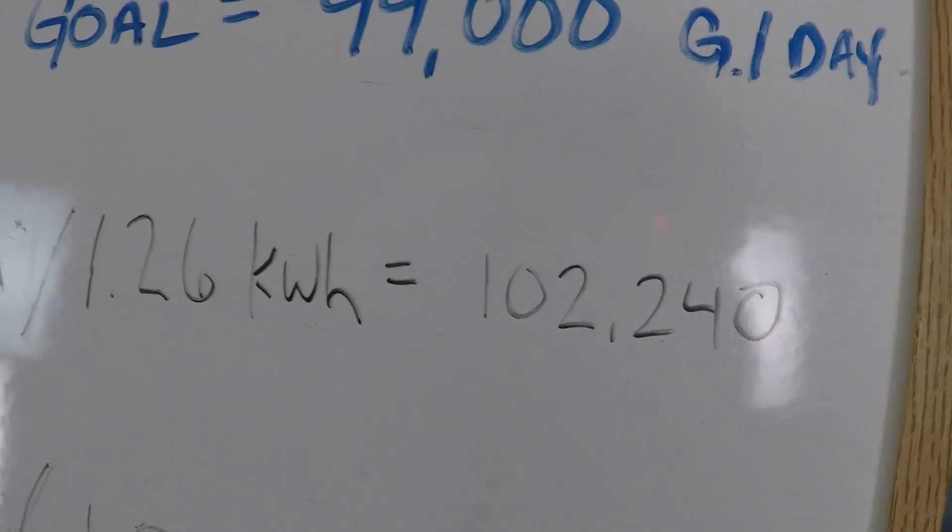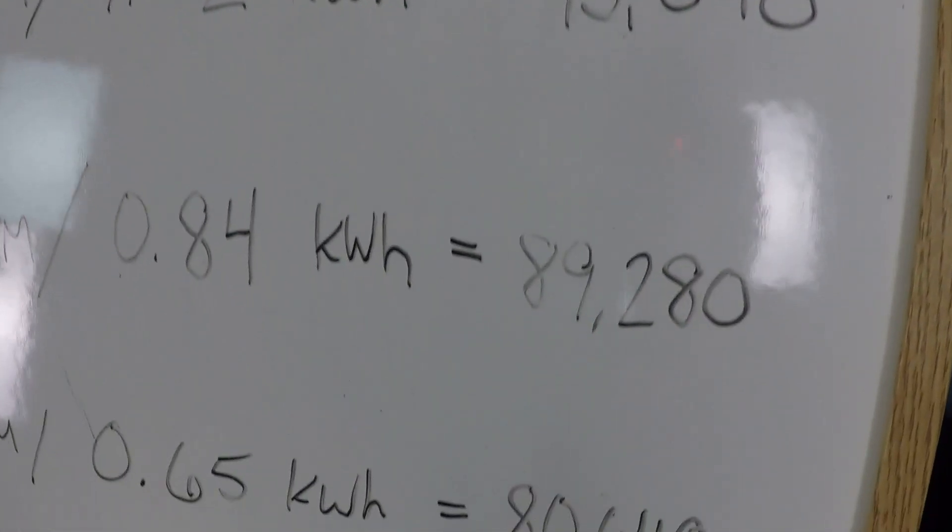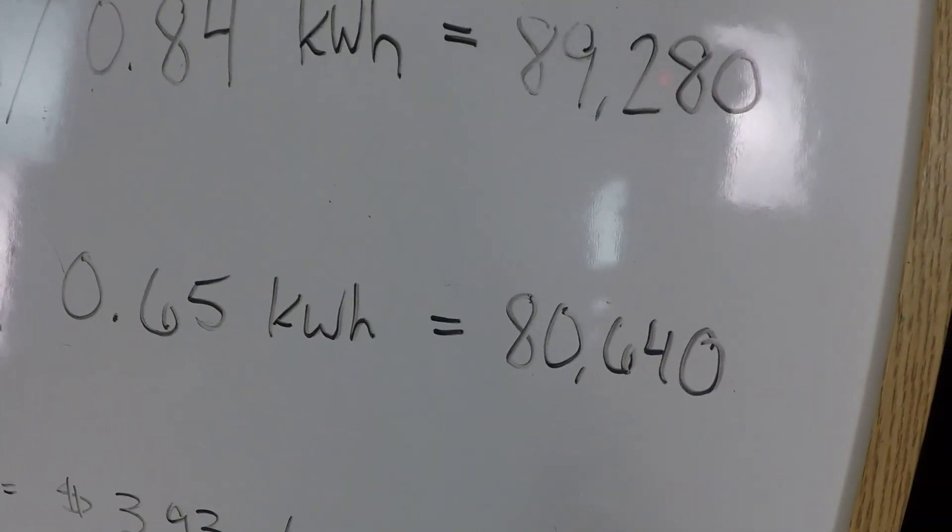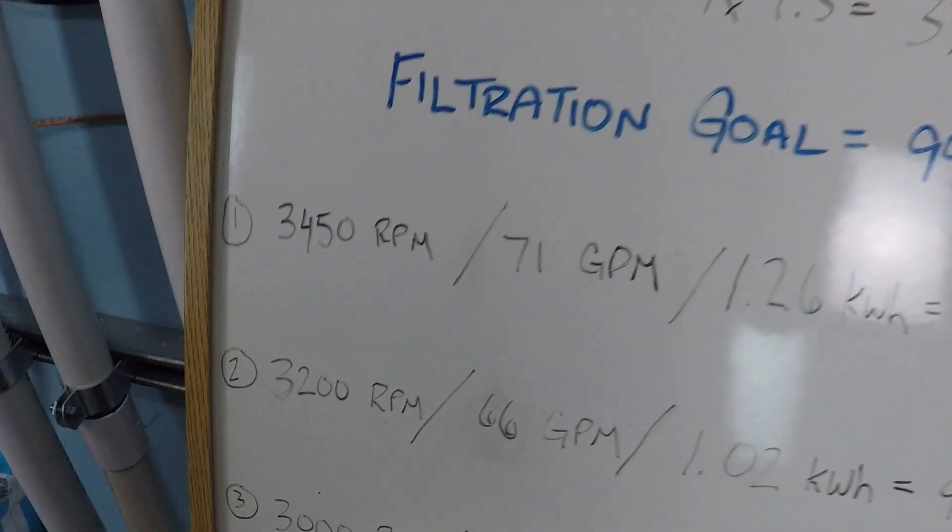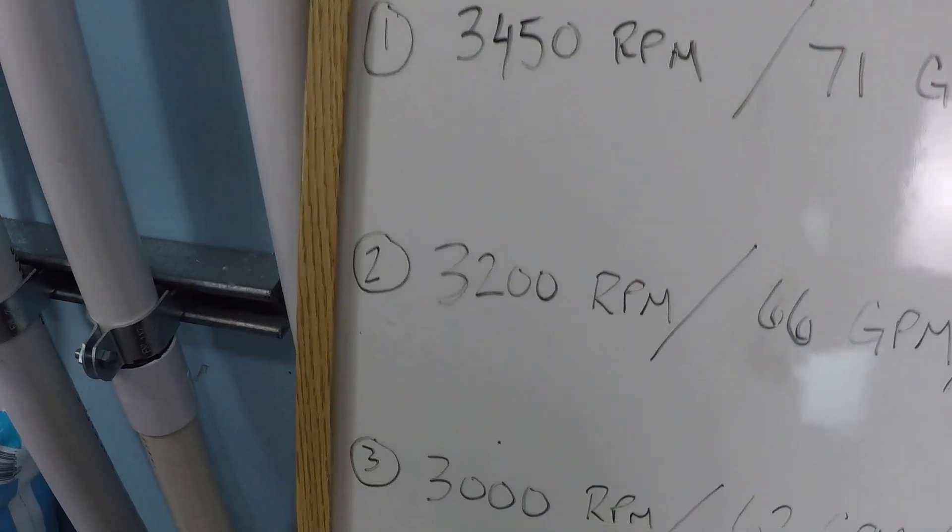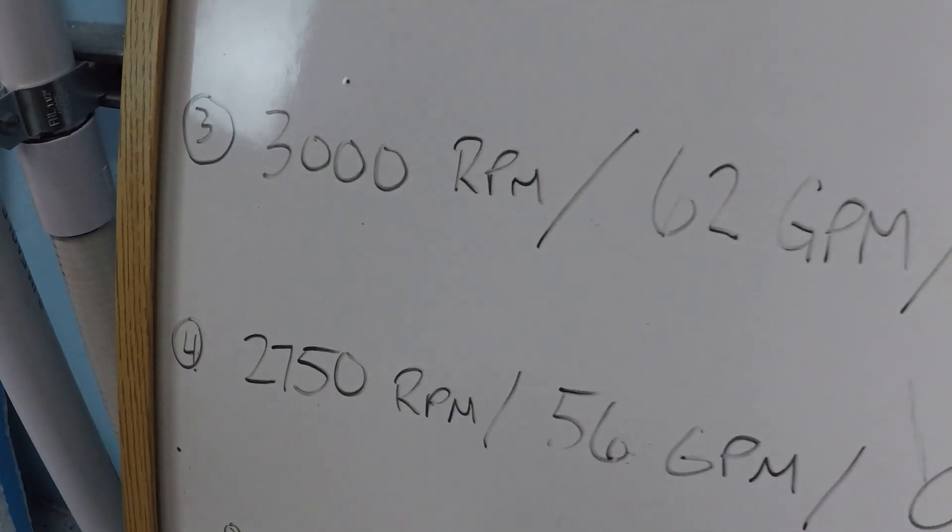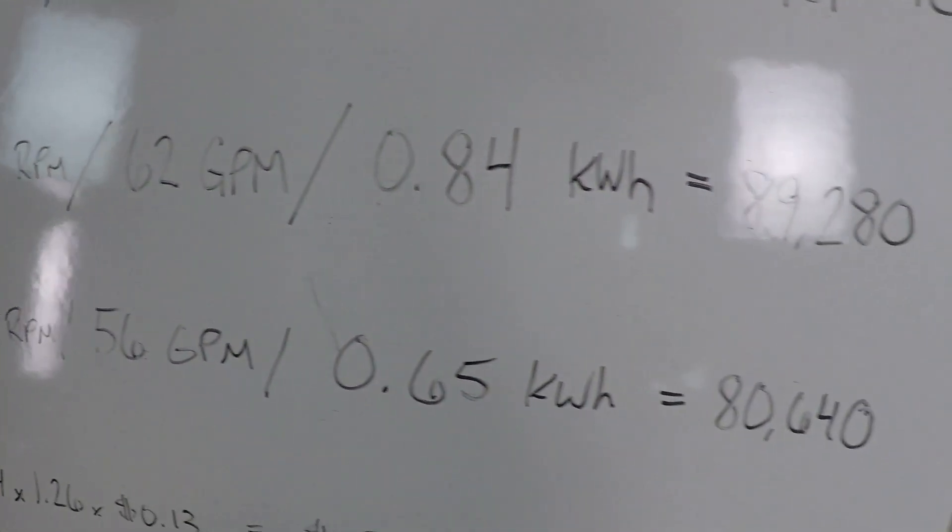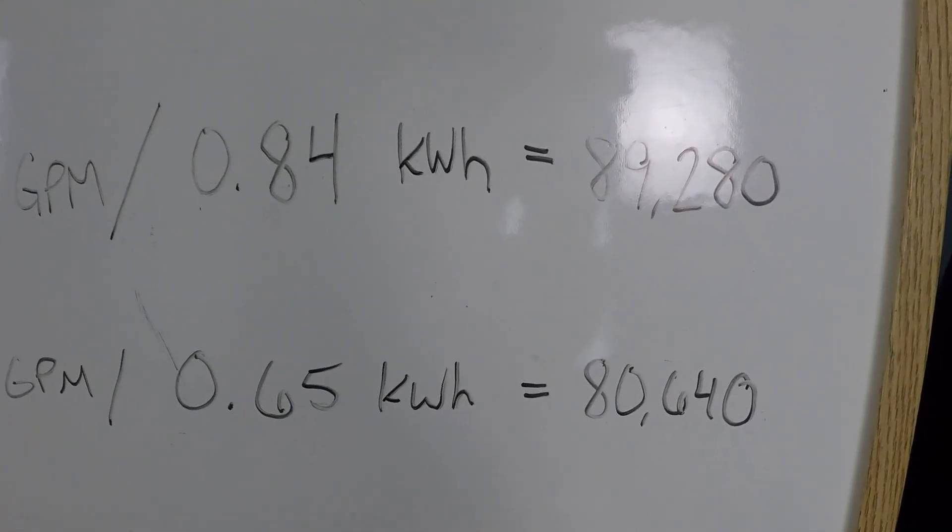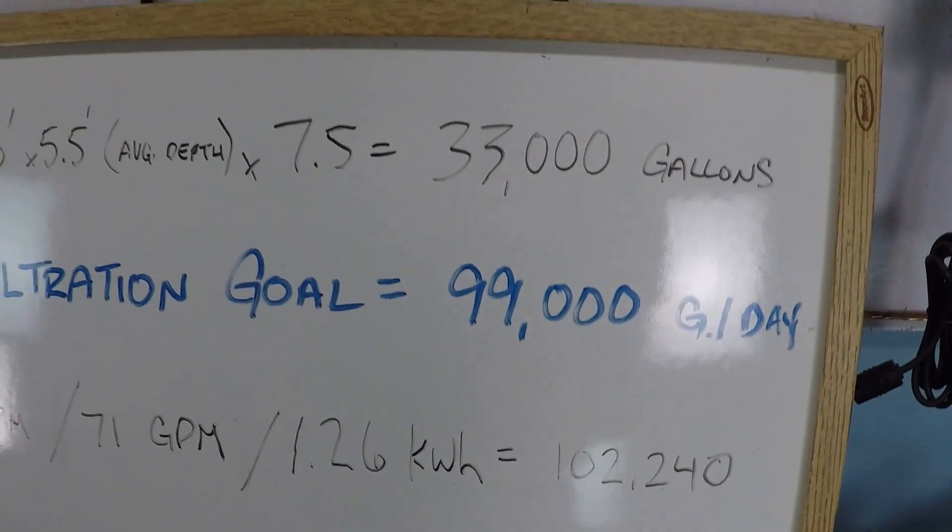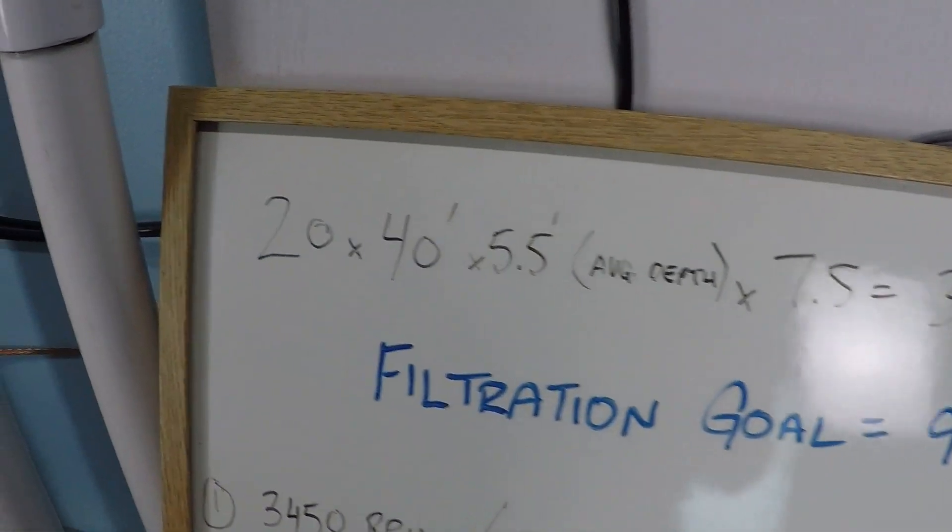We did lose some of our filtration volume, 102,240 all the way down to 80,640. But honestly, if I own this pool, I'm thinking about 3200, 3000, possibly even 2750, especially if this is a pool that doesn't get a lot of use, doesn't get a lot of sun, and doesn't get a lot of organic debris. Maybe you could convince me that less than three turnovers per day is acceptable.